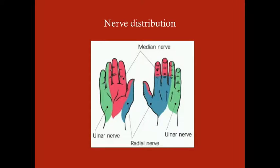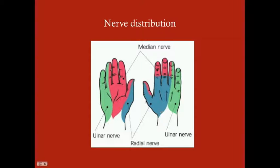The sensory distribution of the hand nerves roughly correlates with motor distribution. The radial nerve provides sensory innervation to the dorsal side of the hand and parts around the thumb. The median nerve covers the middle part of the hand and the palmar side of the thumb. The ulnar nerve covers the medial side — the medial ring finger, the pinky, and the medial hand.